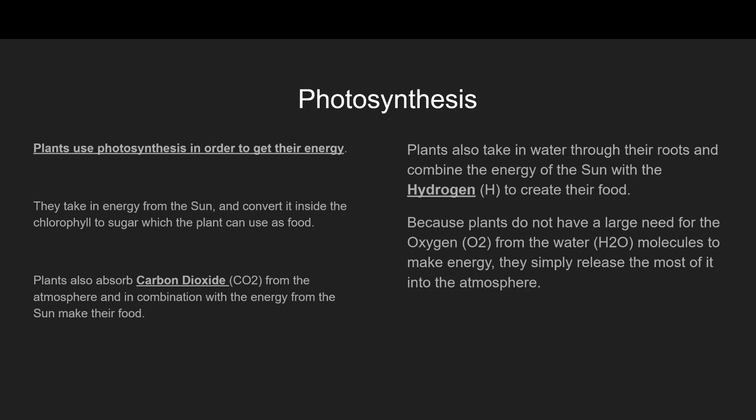Let's start with photosynthesis. Plants use photosynthesis to get their energy — they take energy from the sun and convert it inside the chlorophyll into sugar, which the plant can use as food. You may remember from Miss Cunningham's class when you built your plant cell models, you had to look at the chloroplast and the chlorophyll. This is where plants get their green color, and where they convert energy from the sun into sugar that lets the plant grow and reproduce.